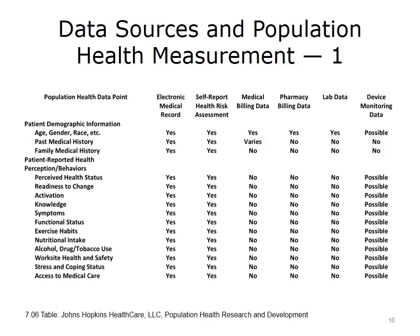This table provides a review of data sources for measuring population health. The column headers are the sources: EMRs, self-reported risk assessments, medical billing, pharmacy billing, labs, and monitoring devices. The types of data that can be gleaned from these sources comprise the row headers, subdivided into four general categories: patient demographic information and patient-reported health perception and behaviors, shown on this slide, and patient health outcomes and utilization and cost types, shown on the next.